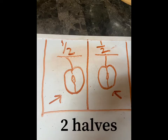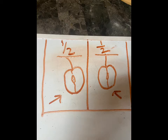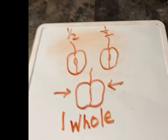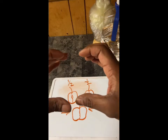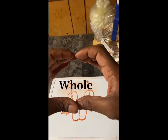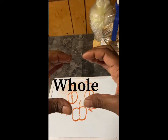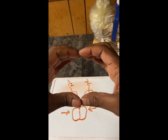Let's look at that apple again. That apple was cut into two pieces — two halves. Two halves make one whole. You see those arrows? They were put together to make one whole. Look at my hands as they come together: whole, half, whole.